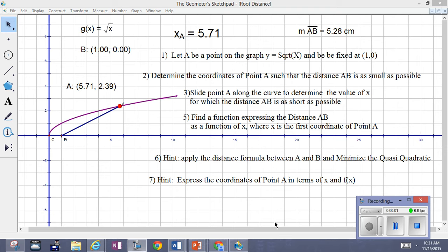Now, one other example of the quasi-quadratic problem is what we're going to look at here. Point A is on the square root of x graph, free to move around.